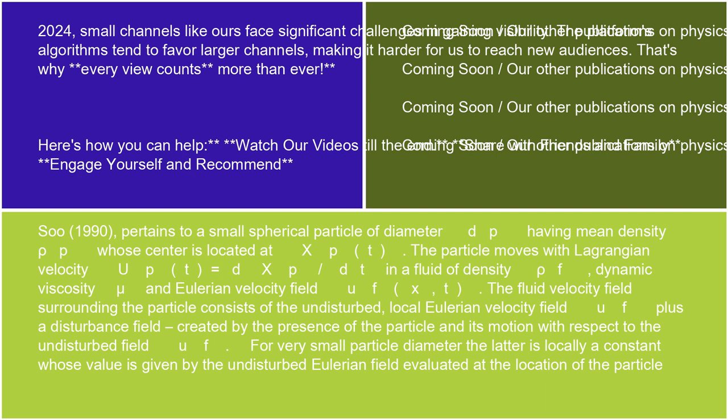The fluid velocity field surrounding the particle consists of the undisturbed local Eulerian velocity field u_f, plus a disturbance field created by the presence of the particle and its motion with respect to the undisturbed field u_f. For very small particle diameter, the latter is locally a constant whose value is given by the undisturbed Eulerian field evaluated at the location of the particle.